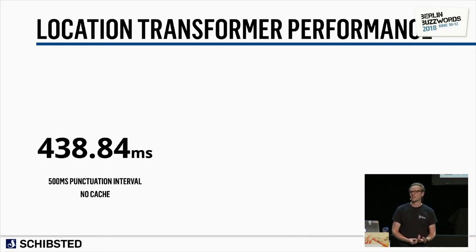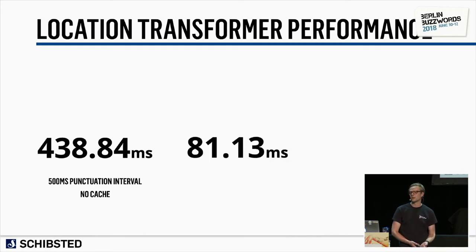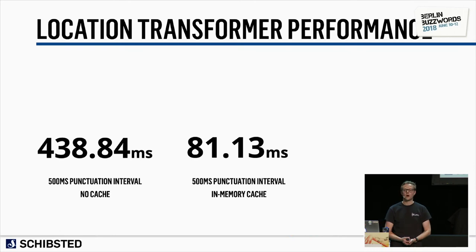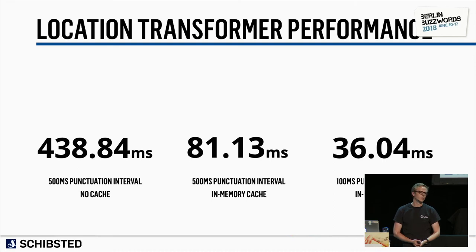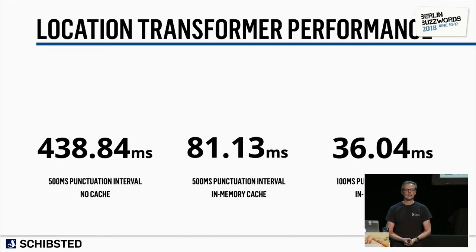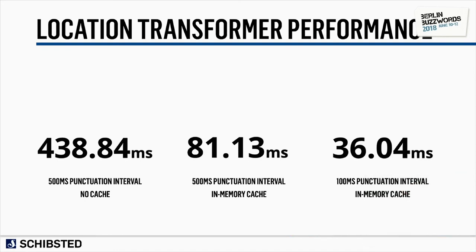IP addresses tend to repeat, and the location API normally returns the same values for a specific IP address over 24 hours. So we implemented an in-memory cache using Guava, which reduced latency to about 80 milliseconds. Then we reduced the punctuation interval to 100 milliseconds, bringing latency down to somewhere between 30 and 40 milliseconds — the time from when the app picks up an event from the stream until it writes it back. This is an absolutely decent result.